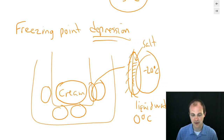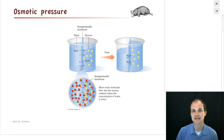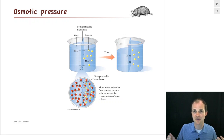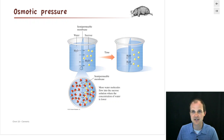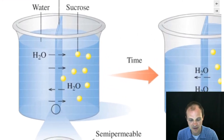Along with boiling point elevation and freezing point depression, there's one more important colligative property: osmotic pressure. Osmotic pressure is an amazing phenomenon — it's like the king of colligative properties. Boiling point elevation is usually one or two degrees. Freezing point depression maybe five to ten degrees. But very small changes in concentration cause huge changes in osmotic pressure.